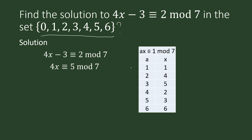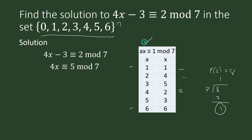Looking at the integers 1 to 6 and their multiplicative inverses modulo 7, the multiplicative inverse of 4 modulo 7 is 2. Why? Because 4 times 2 is equal to 8, and when we divide 8 by 7, the remainder is 1. That is our definition of a multiplicative inverse: x is the multiplicative inverse of A if the product is congruent to 1 modulo 7. So we will multiply this congruence equation by 2.